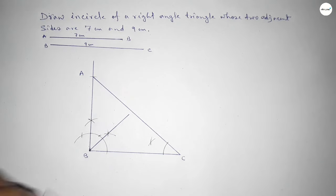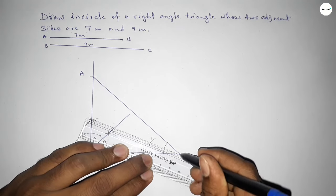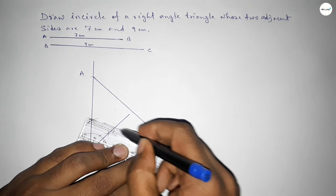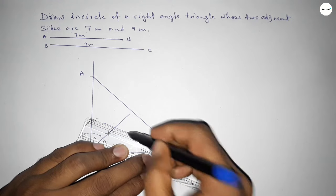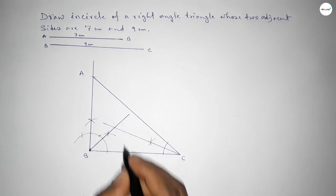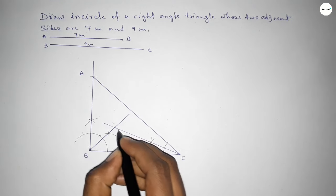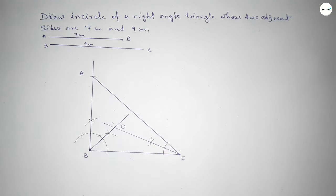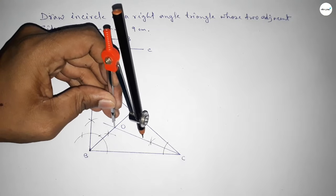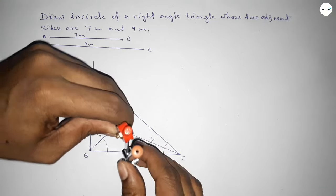Also joining the line which is the bisector of angle C. Both bisectors intersect at a point, which we are taking as point O.